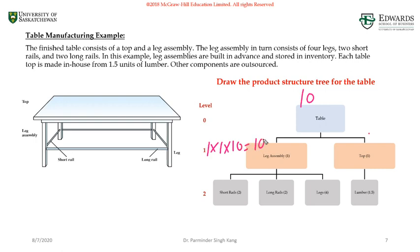Similarly, I will need 10 tops. Since there's a need for 10 leg assemblies, I need two short rails for one leg assembly, which gives me a total requirement of 20 short rails. We know that we need 10 leg assemblies, so the net requirement is 20.